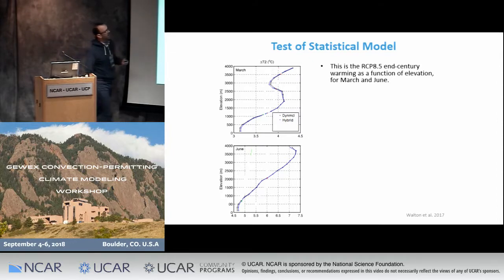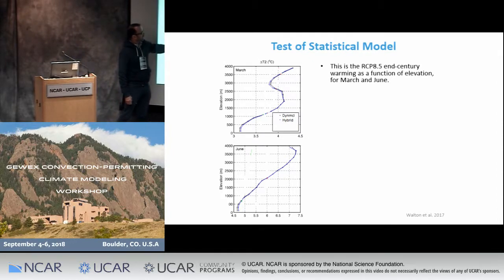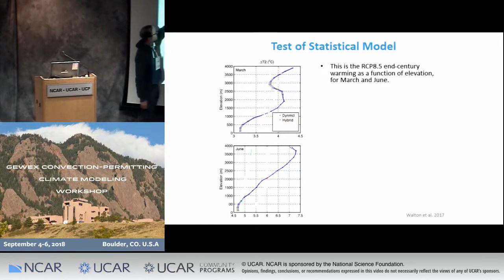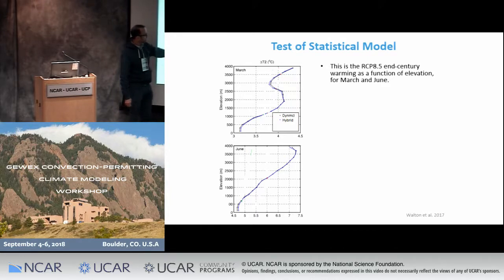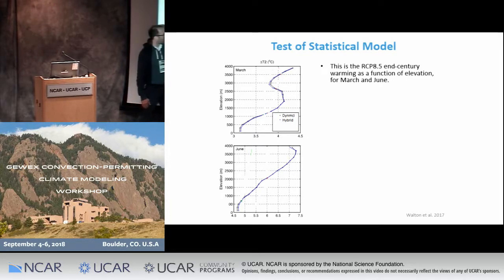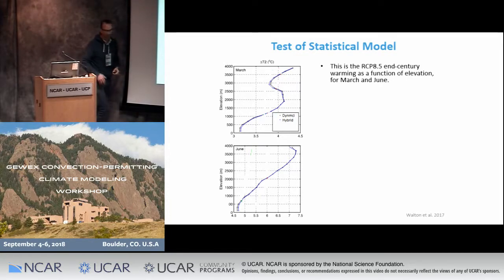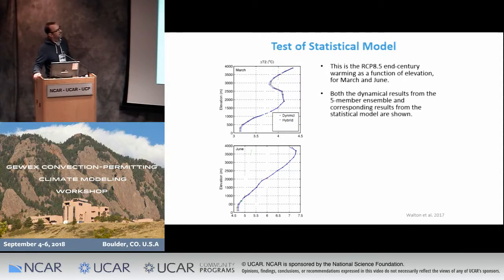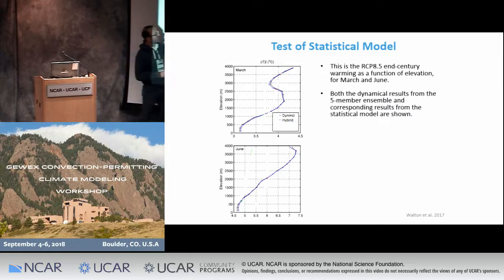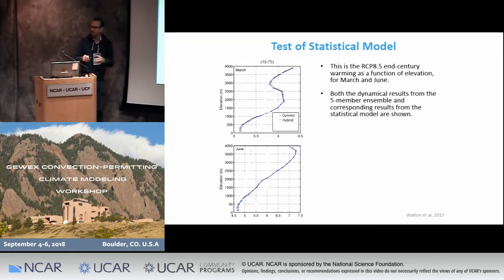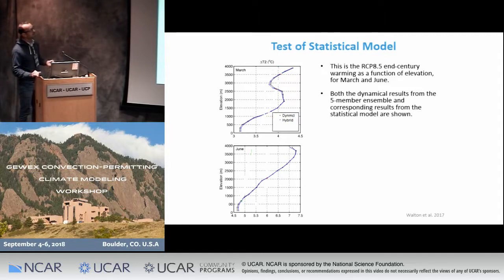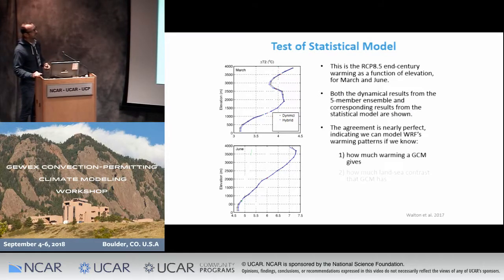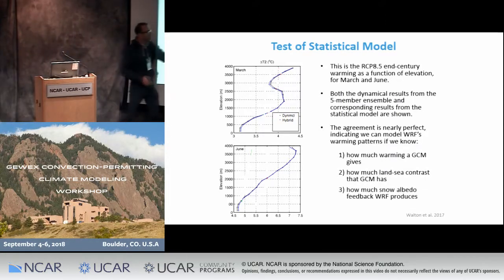This is the warming as a function of elevation for March and for June. You can see a bulge in warming at these middle elevation areas — in March this corresponds to areas where snow albedo feedback is very active, and in June the warming bulge migrates up the mountains, with bigger warming at around 3,500 to 4,000 feet. Both the dynamical results and the corresponding results from the emulator are shown, and you can see they overlap almost perfectly. This means we can model WRF's warming patterns if we know the GCM warming, land-sea contrast, and snow albedo feedback.